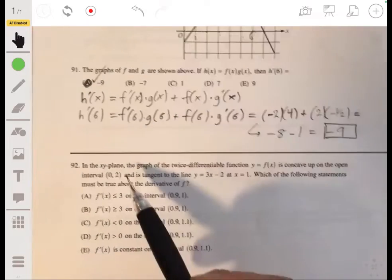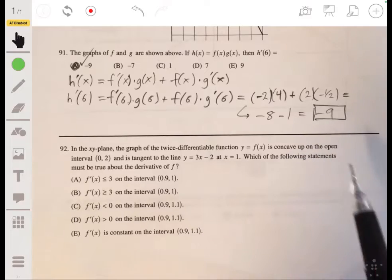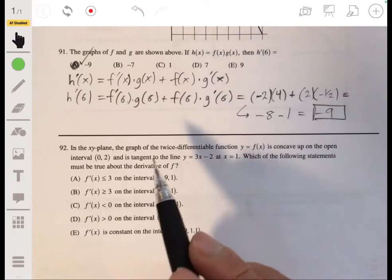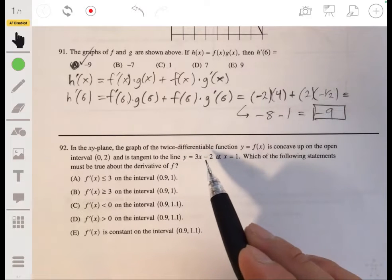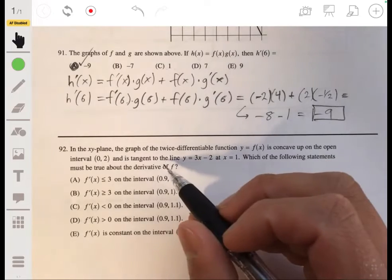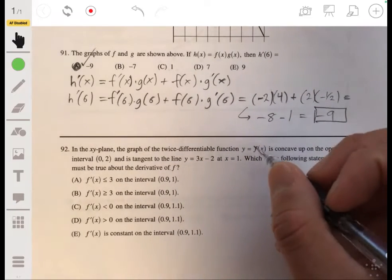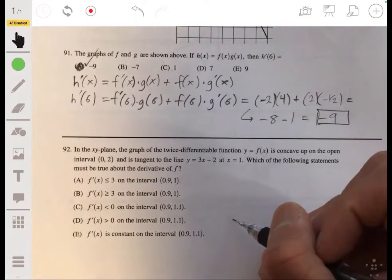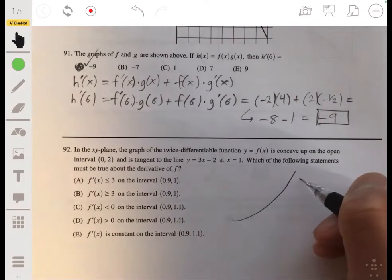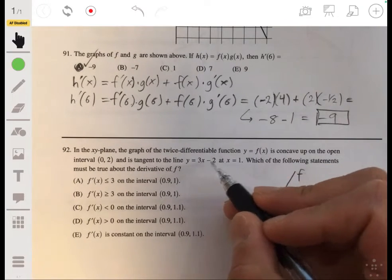All right, last one. In the xy plane, the graph of the twice differential function y equals f of x concave up on open interval 0 to 2. And it's tangent to the line y equals 3x minus 2 at x equals 1. Which of the following statements must be true about the derivative of f?